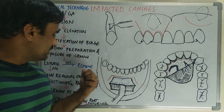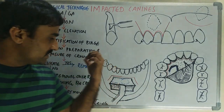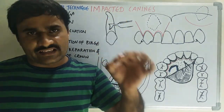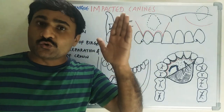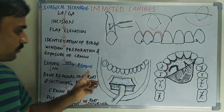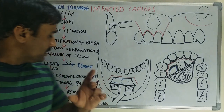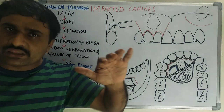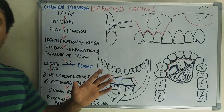If luxation is not possible, additional bone is removed over the root surface, and the crown is sectioned from the root. The crown is removed first, then a purchase point is prepared near the sectioned root surface. Using elevators (tryers), the root is dislocated and removed separately. For maxillary canines, curvature in the apical third of the root is common — in such cases, direct removal of the whole tooth is not possible, making crown-root sectioning necessary.